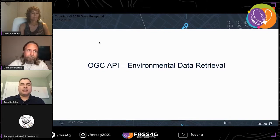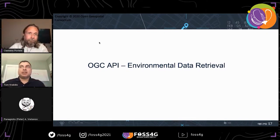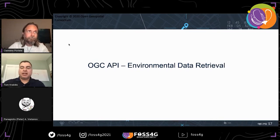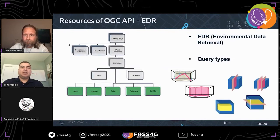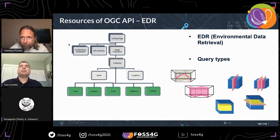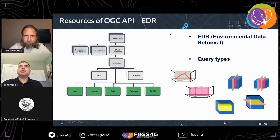Following on, you can see the value of the OGC APIs with the building blocks that Clemens demonstrated — and Peter will demonstrate them as well afterwards. Here we are going to talk about the EDR way of leveraging those building blocks for environmental data retrieval use cases. Here we see our building block slide: the familiar landing page, the listing of collections, the API definition, as well as listing collections and their items.